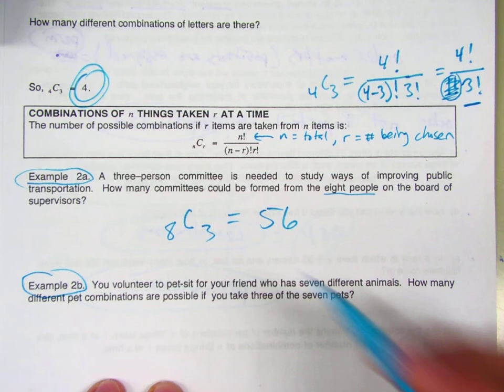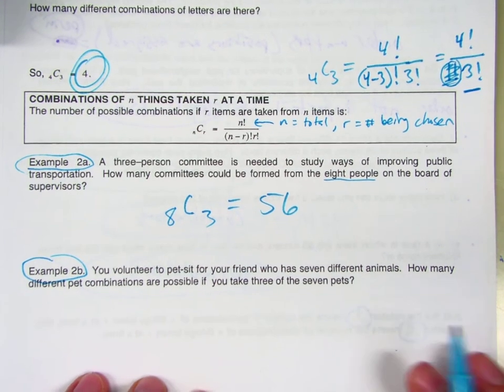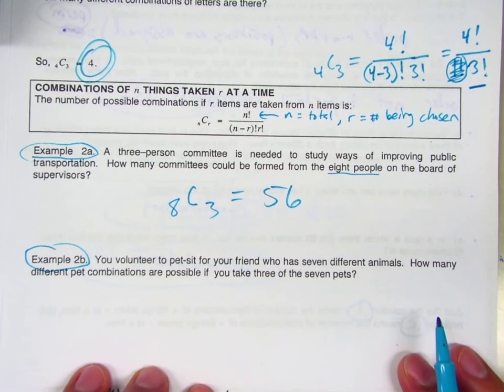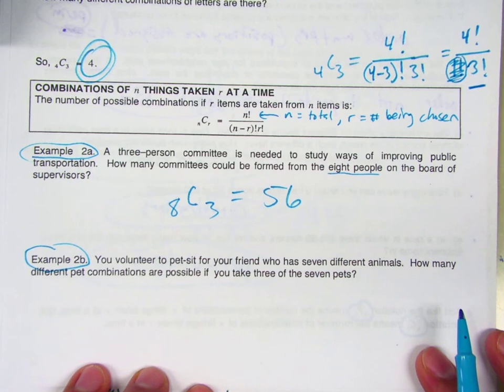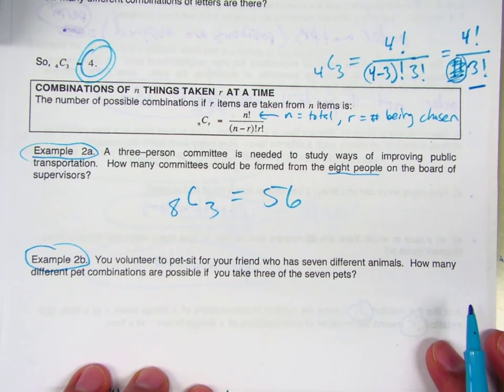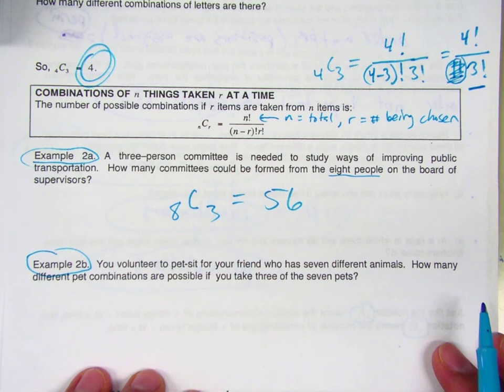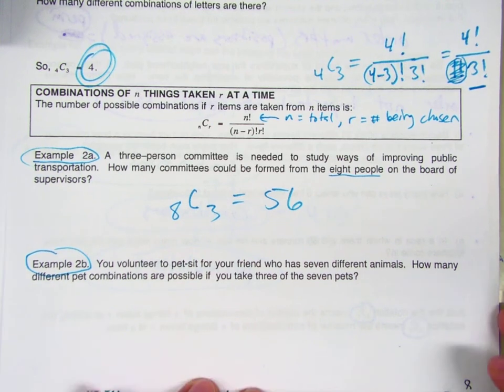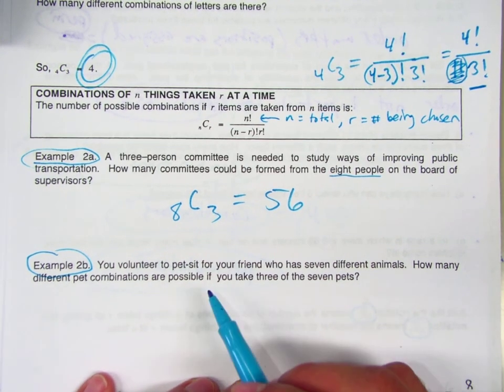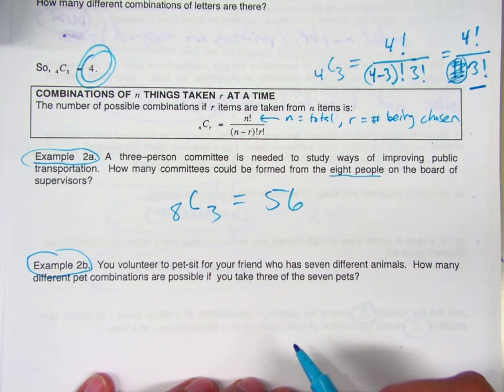Let's try one more. Seven different animals. And you volunteer to pet sit three out of those seven. Sounds like a fun time, actually. Does the order matter in which you choose the pets? It's just really all we care about is what three pets are going to be making a mess in our place, right?